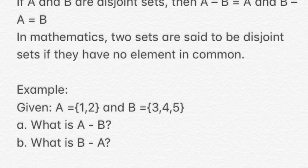So if we're going to have A minus B, we can just have the elements of A, which are 1 and 2. And if we're going to have B minus A, this will be just equal to B, which is the set containing 3, 4, and 5.